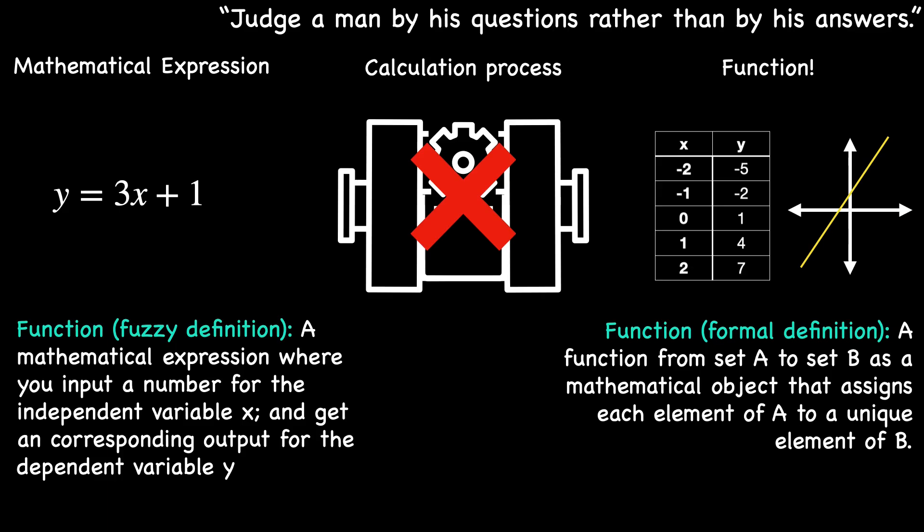According to the professor, a function simply needed to ensure that every element in A maps to a value in B, without regard for how those values were computed. Do you see any advantages to abstracting away the calculation process of a function? Any disadvantages?